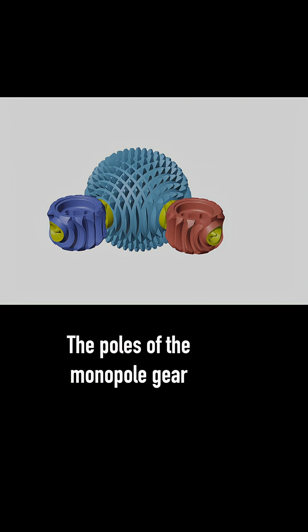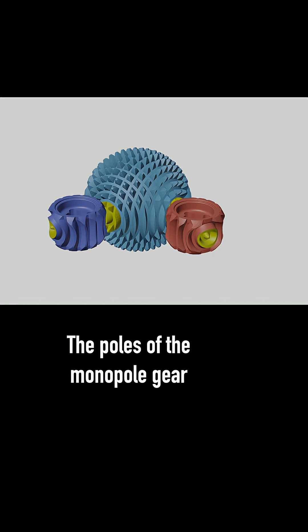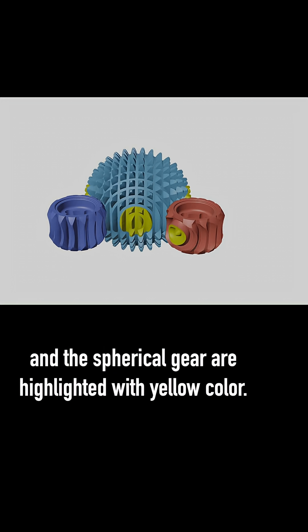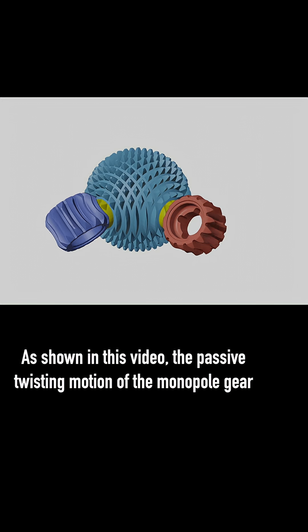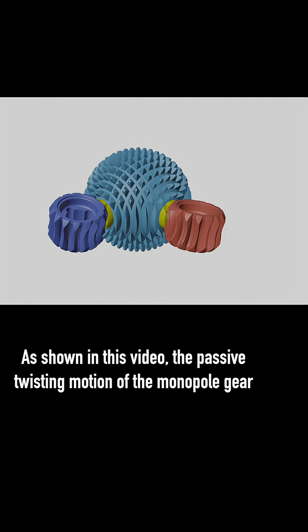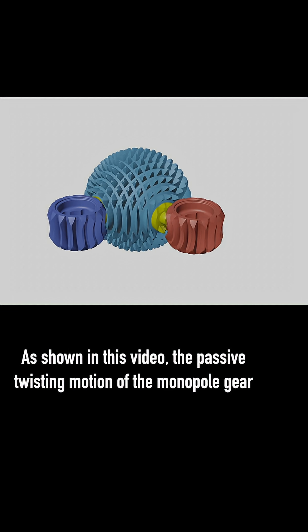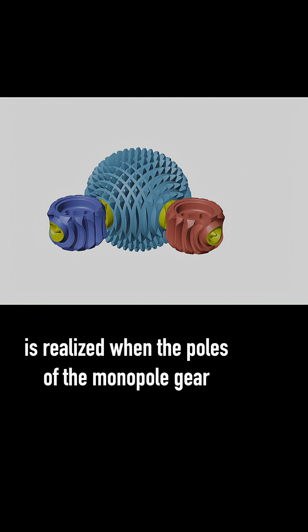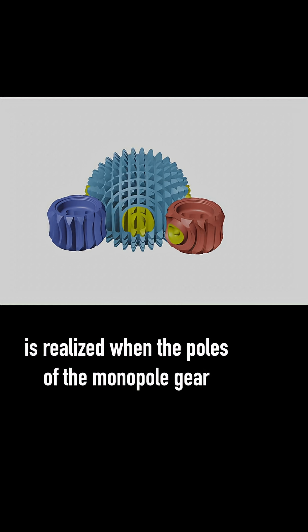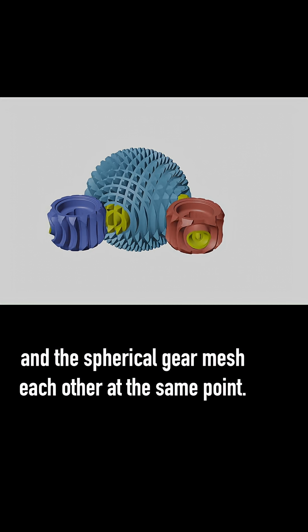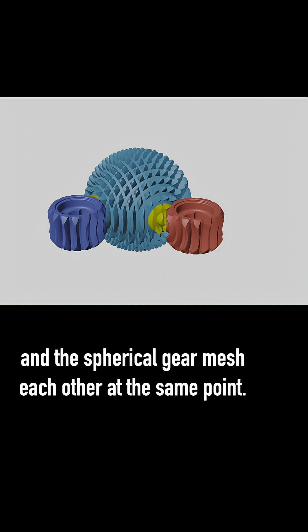The poles of the monopole gear and the spherical gear are highlighted with yellow color. As shown in this video, the passive twisting motion of the monopole gear without any power transmission is realized when the poles of the monopole gear and the spherical gear mesh each other at the same point.